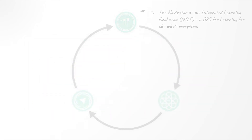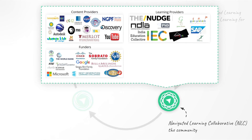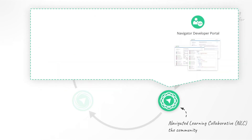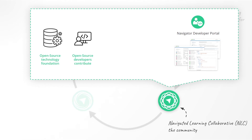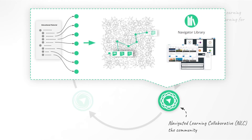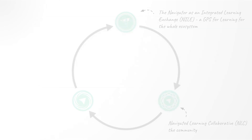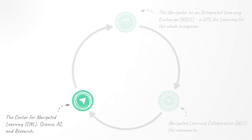The second element needed is the community. We call this the Navigated Learning Collaborative — it already has over 65 collaborators from content providers to funders, learning providers, and technology developers. This is where we've established the open-source technology foundation where Guru Navigator is developed. Open-source developers contribute to Navigator's evolution, curriculum and tool providers incorporate their interoperable services, and tech partners integrate Navigator's open content and capabilities into their own applications. It's where competency frameworks are developed, educational materials like curriculum, textbooks, YouTube videos, and online courses are mapped to those competencies, and where the ecosystem supports each other to design solutions and ensure every collaborator's success.